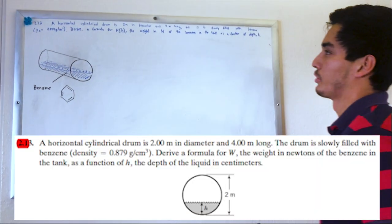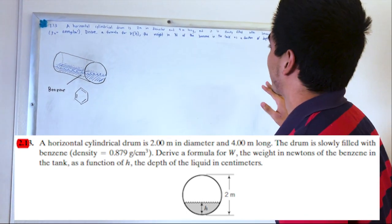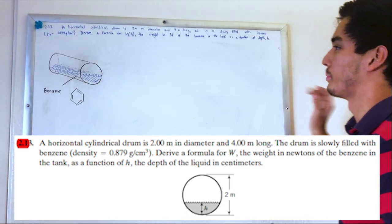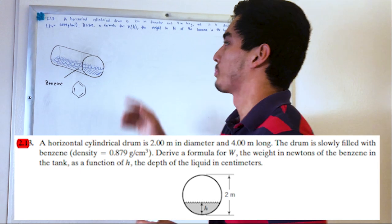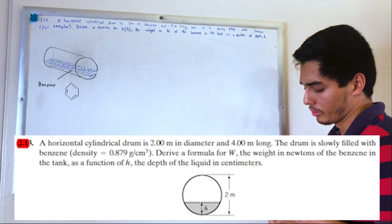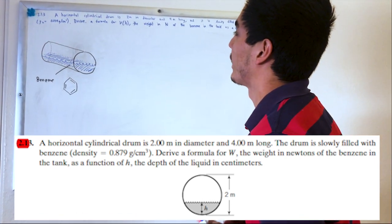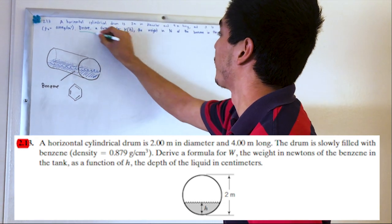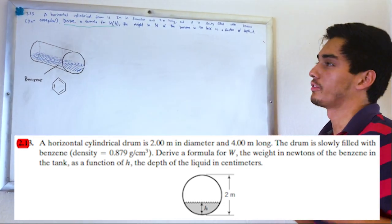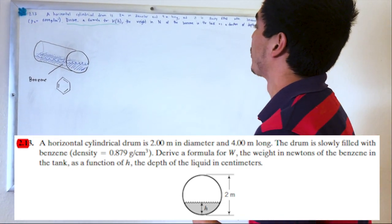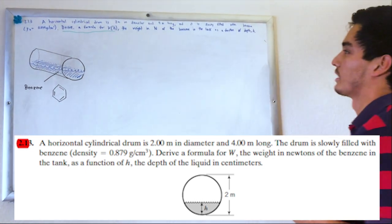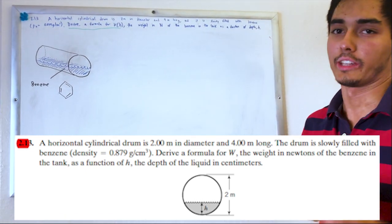So a horizontal cylinder drum is two meters in diameter and four meters long and it is slowly filled with benzene. The density of benzene is 0.879 grams per centimeter cubed and we have to derive a formula for the weight of the benzene as a function of height. Okay so the weight in newtons of the benzene in the tank as a function of the depth h.